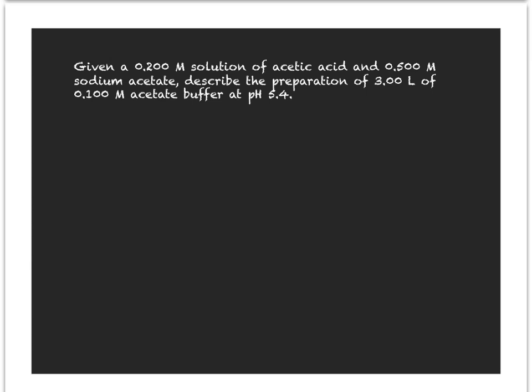Now let's look at a buffer problem. For some reason, students have a lot of problems with buffers. But buffers really come down to a few simple things. Buffers are always a mixture of some kind of weak acid and its conjugate base in the same solution. And it's the ratio of how many moles of acid to how many moles of base — or what's the concentration of the acid to the concentration of the base — that determines the final pH of the buffer.